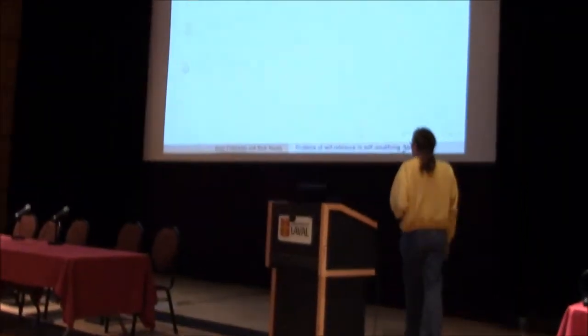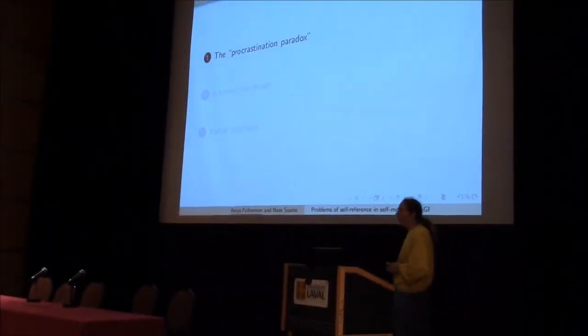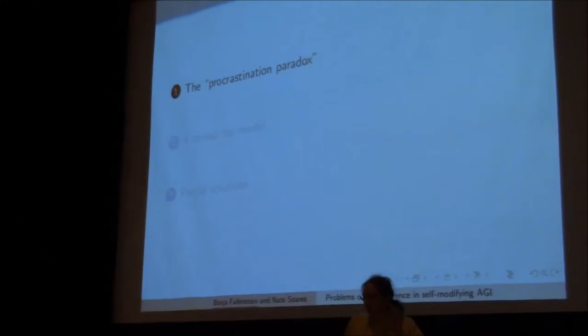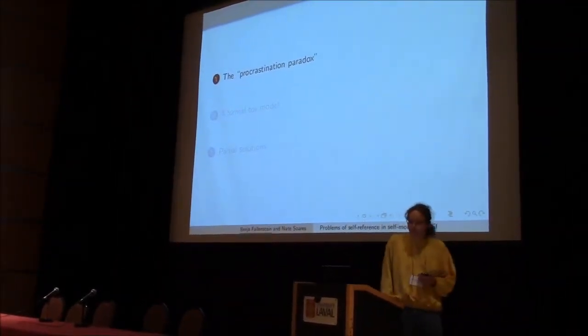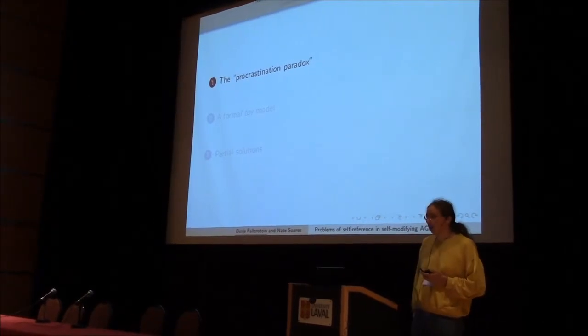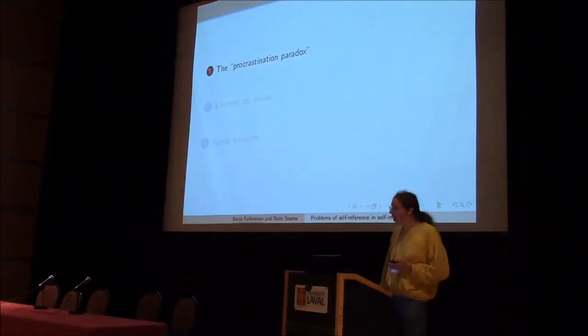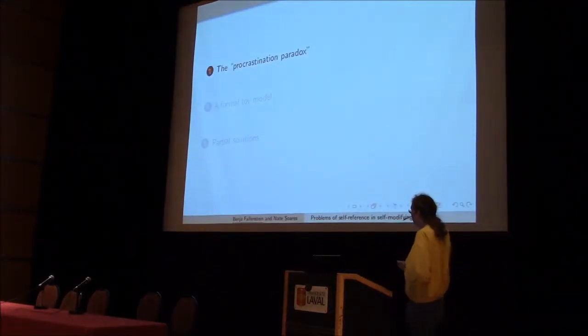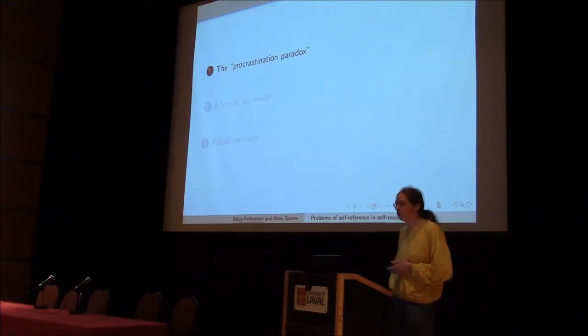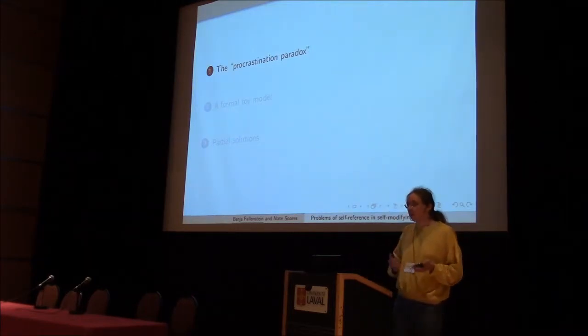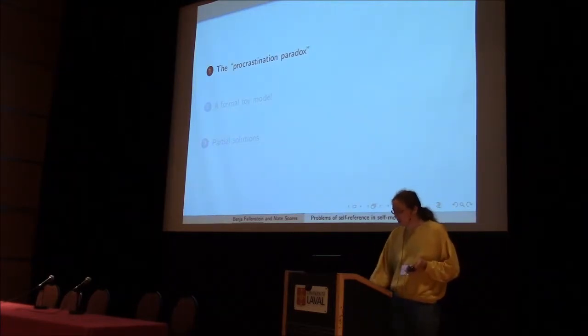Here's the general plan for the talk. I'll first give you an intuitive example of how this sort of thing can be a problem. Then I'll talk about the formal toy model of this sort of problem. And finally, I'll give some partial solutions in the context of this toy problem and think about what they can tell us about this general problem.